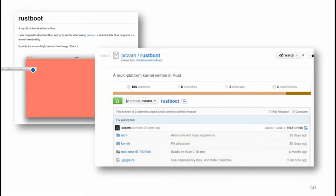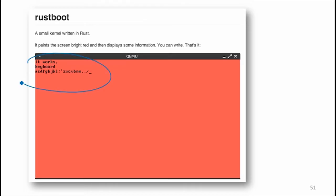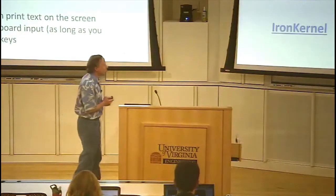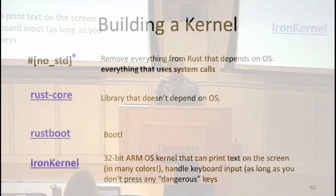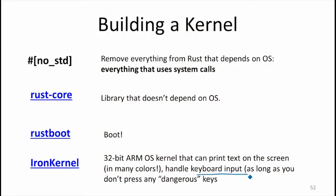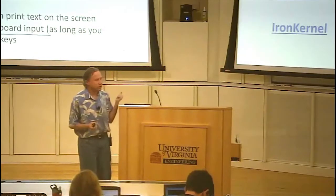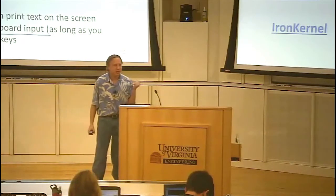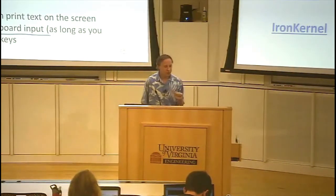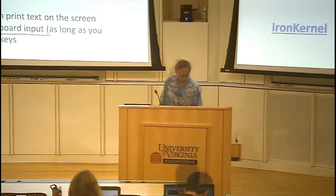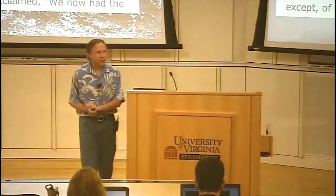It's not something you'd want to run on your laptop yet, unless you really like red. Various people forked it and built things a few steps further. PZ Zarn built a version that could actually print characters — still a red background, but other progress. The team last semester extended it in Iron Kernel so you could get input, different colors, and other things. It's still a long way from a full OS, and it runs on a 32-bit ARM processor, like those in Pebble watches and Raspberry Pis.